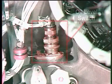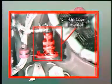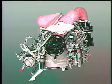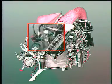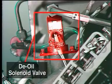The oil level switch is located near the 3 o'clock position on the accessory gearbox. The de-oil solenoid valve is located near the 2 o'clock position on the right side of the accessory gearbox.